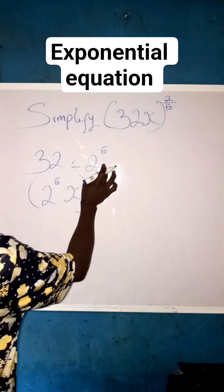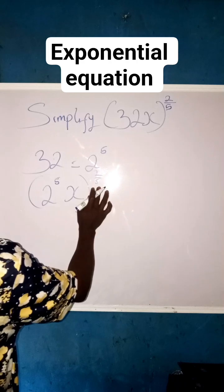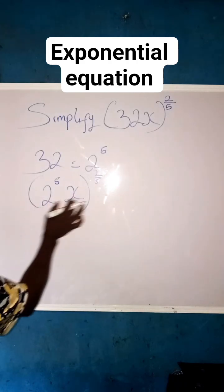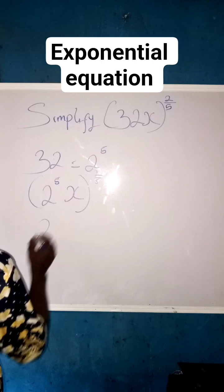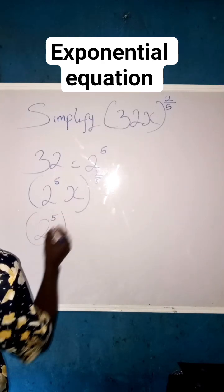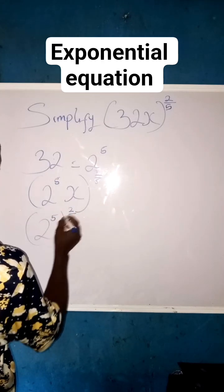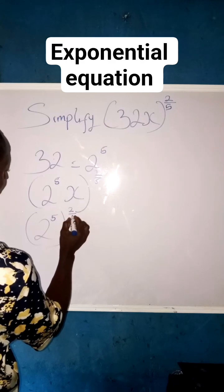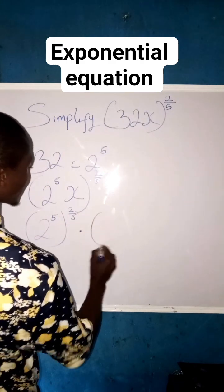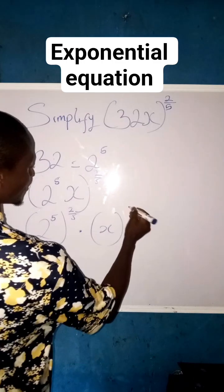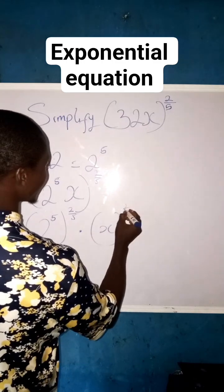2 raised to power 2 all over 5. So we share it, we share it to both this number and this number. So that we now have 2 raised to power 5, raised to the power of 2 over 5, then times x raised to power 2 all over 5.